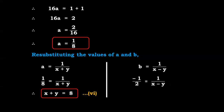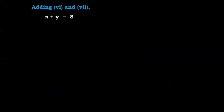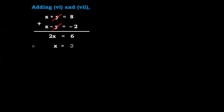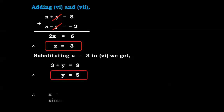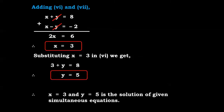Similarly for b: minus 1 upon 2 equals 1 upon (x minus y), so x minus y equals minus 2 — equation number 7. Adding equations 6 and 7: x plus y equals 8 and x minus y equals minus 2. The y terms cancel, giving 2x equals 6, therefore x equals 3. Substituting x equals 3 in equation 6: 3 plus y equals 8, so y equals 5. Therefore x equals 3 and y equals 5 is the solution of the given simultaneous equations.